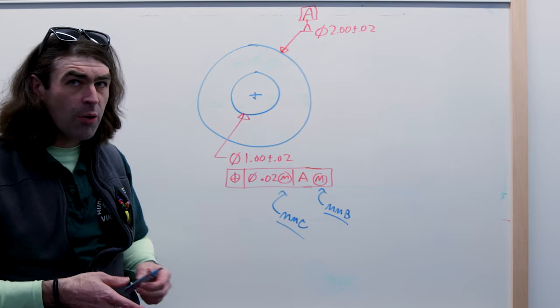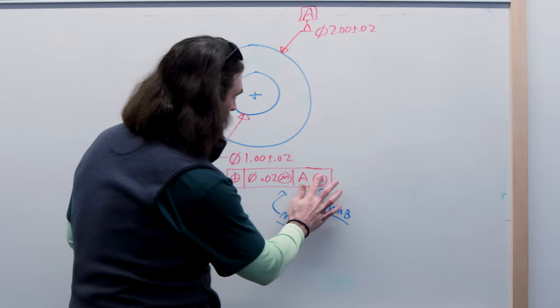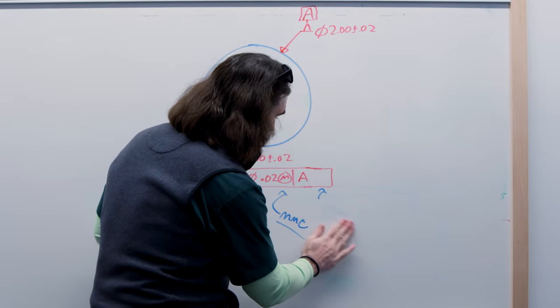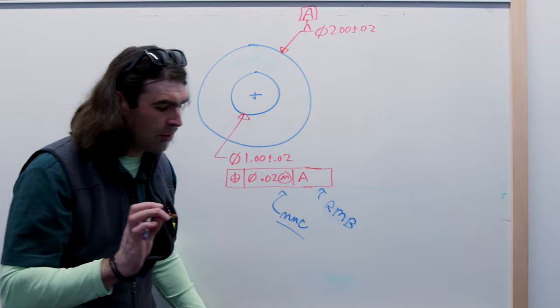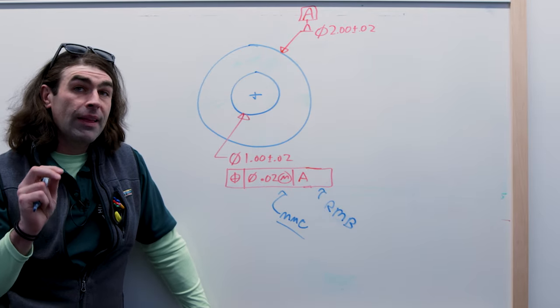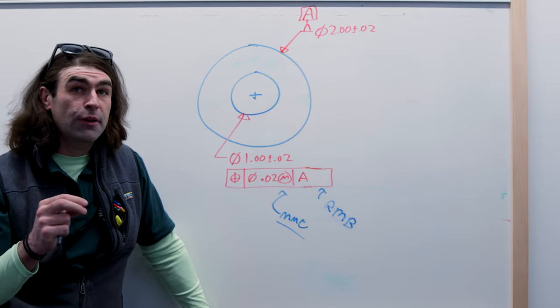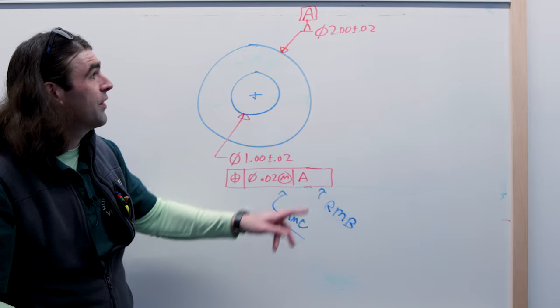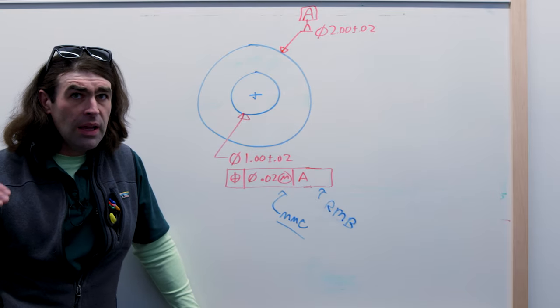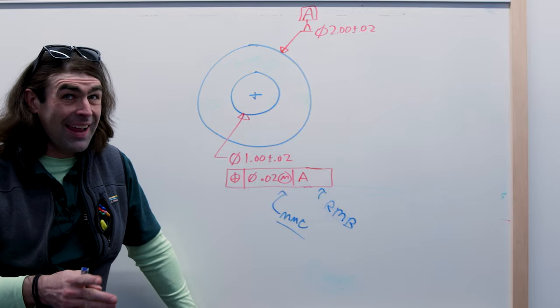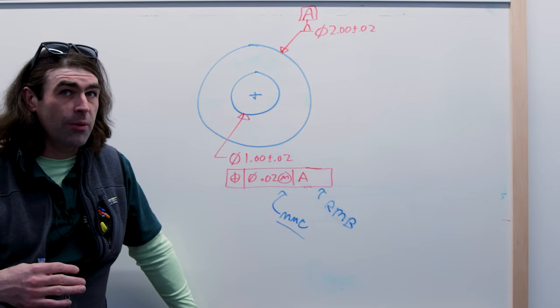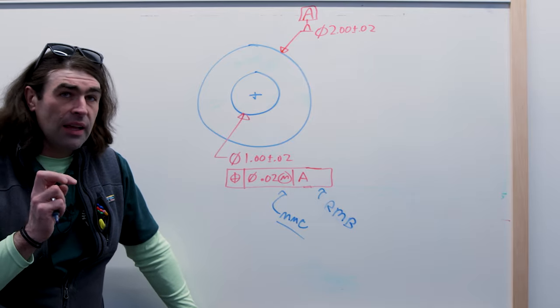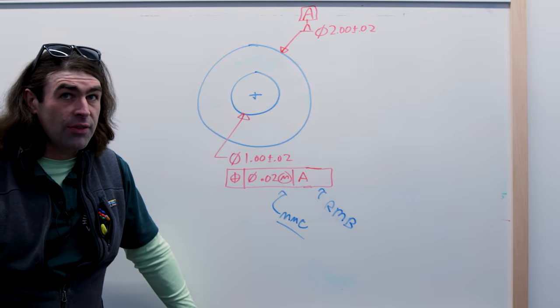What it really means is that we can set that datum feature at a fixed size for inspection. So the default requirement for a datum feature - let me make this clear too. The datum feature needs to be a feature of size. In this case we've got a diameter. So it's typically going to be a diameter or something, but it's got to be a feature of size, not a plane. That wouldn't work.